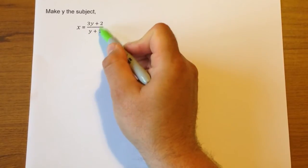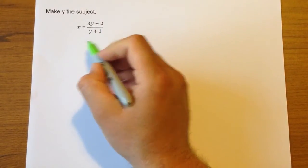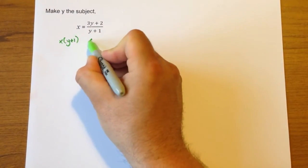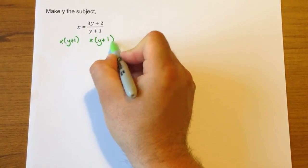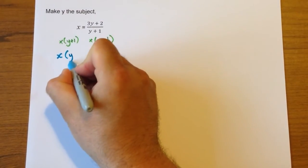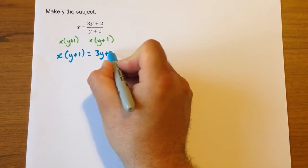First, let's get rid of this fraction. To get rid of the divide by y plus 1, we need to multiply both sides by y plus 1. So that's going to look like x(y+1) = 3y+2.